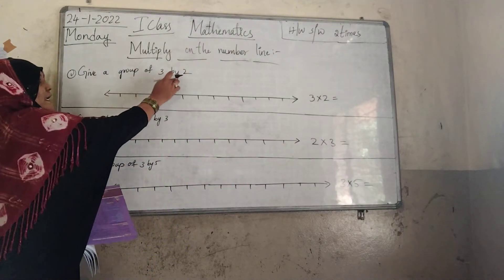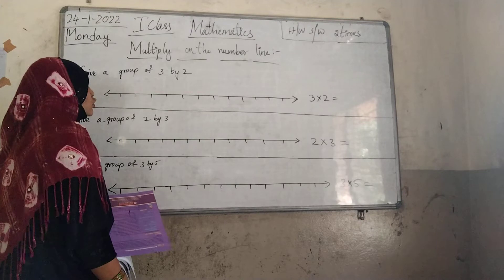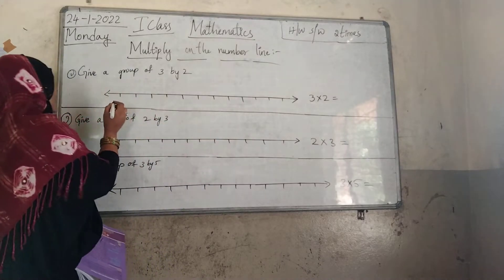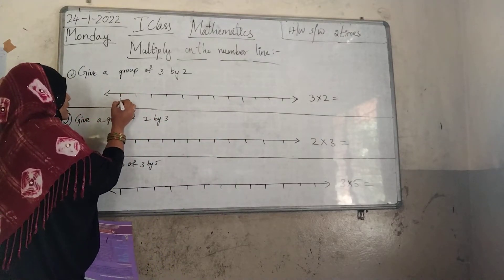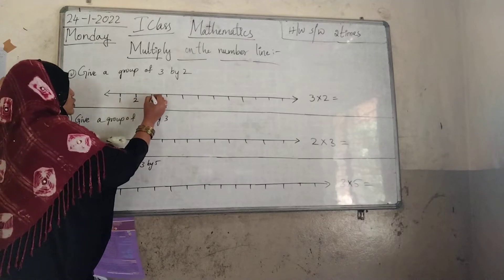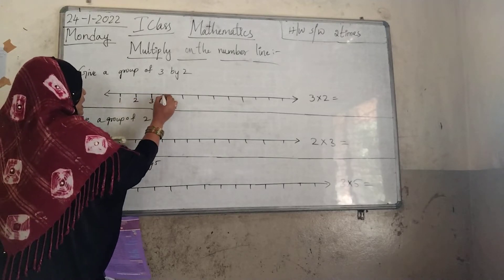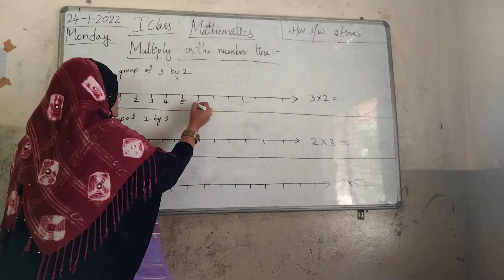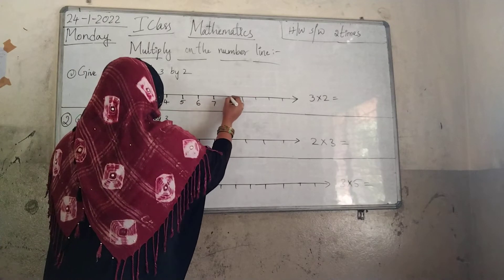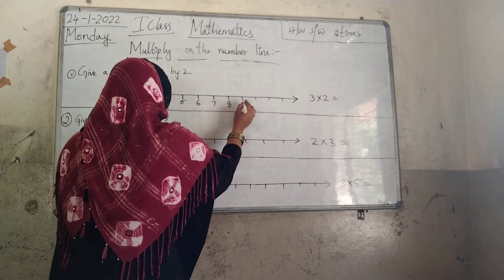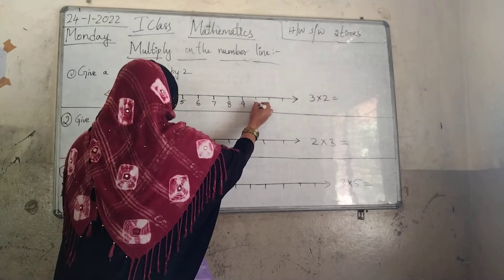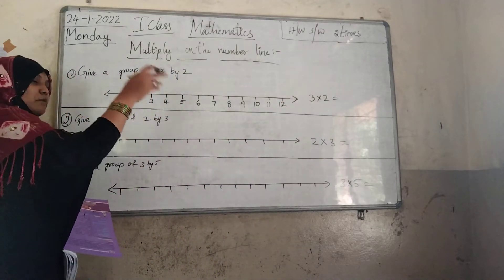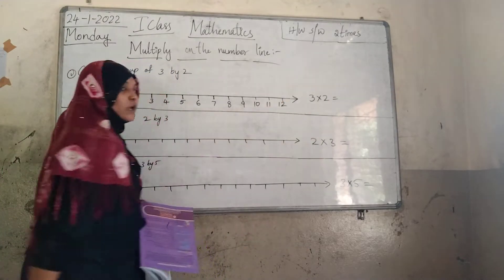Give a group of 3 by 2. First you have to draw this line. Now I will write the numbers: 1, 2, 3, 4, 5, 6, 7, 8, 9, 10, 11, 12. We can write many more numbers, but now I am writing only up to 12.